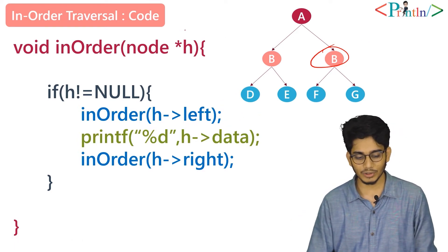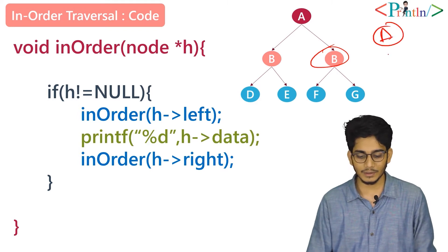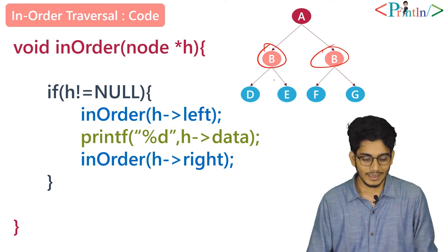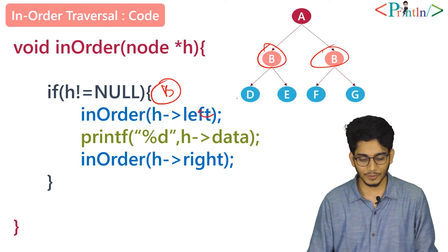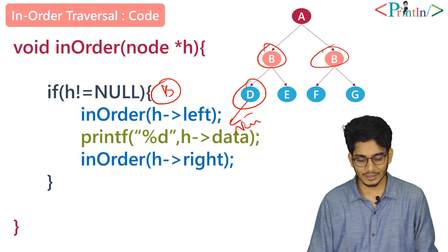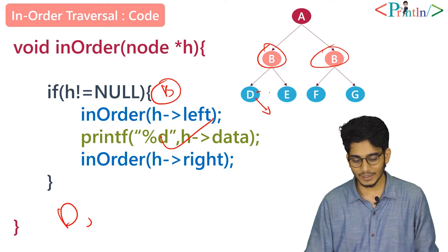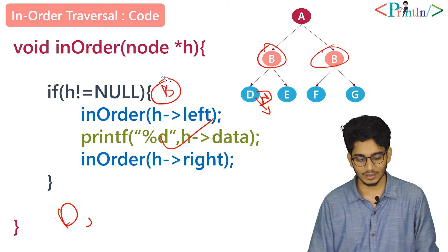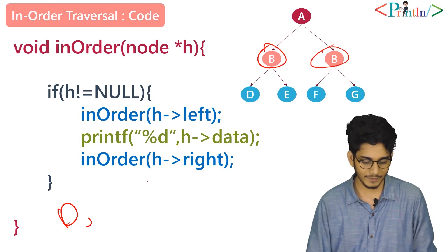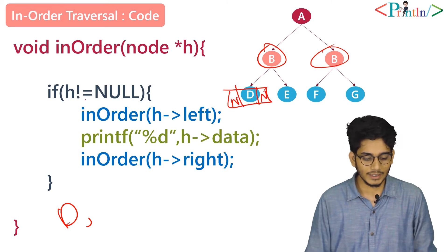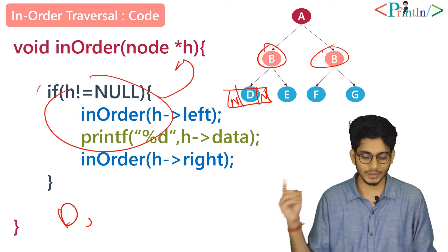At first we will pass the root node. The root node has A. Then what we will do? We will go for A's left, that is B. Now again, B will come here. Then we will call D. What we will do? We will go for D's left, but it has null as D's left. Then what we will do? We will print D. It has null on both sides, so this function won't be executed and we will just print D. When it gets null, it won't be executed, so it will return control to its previous node.